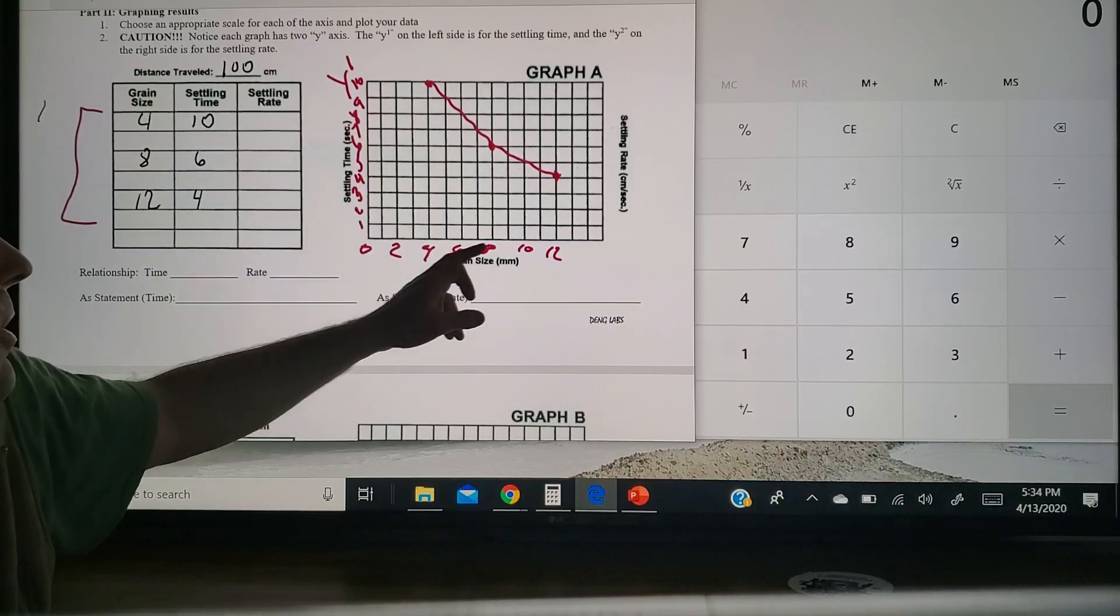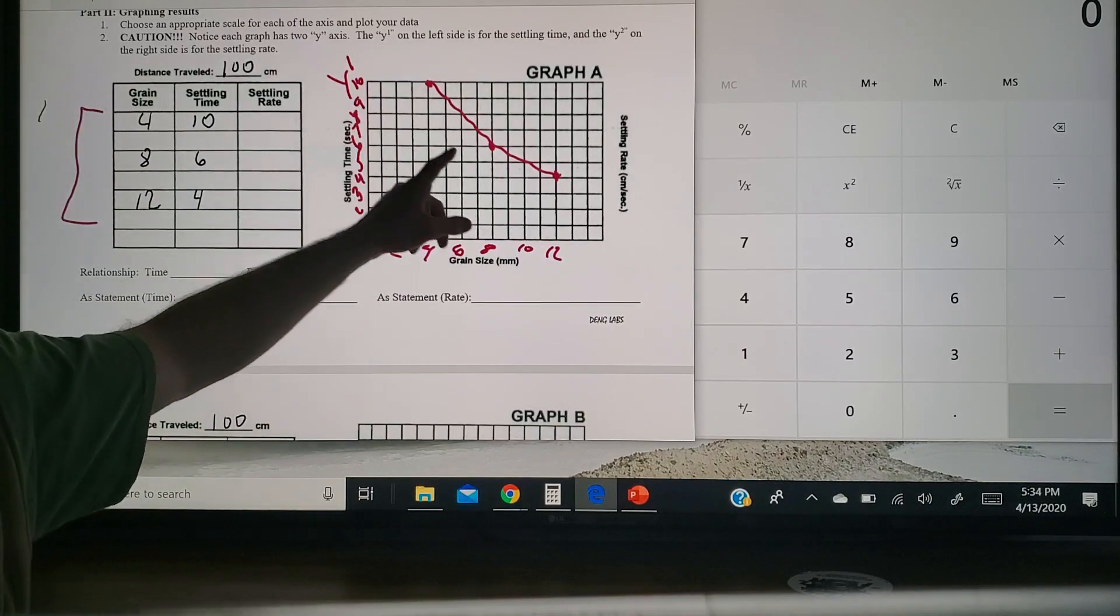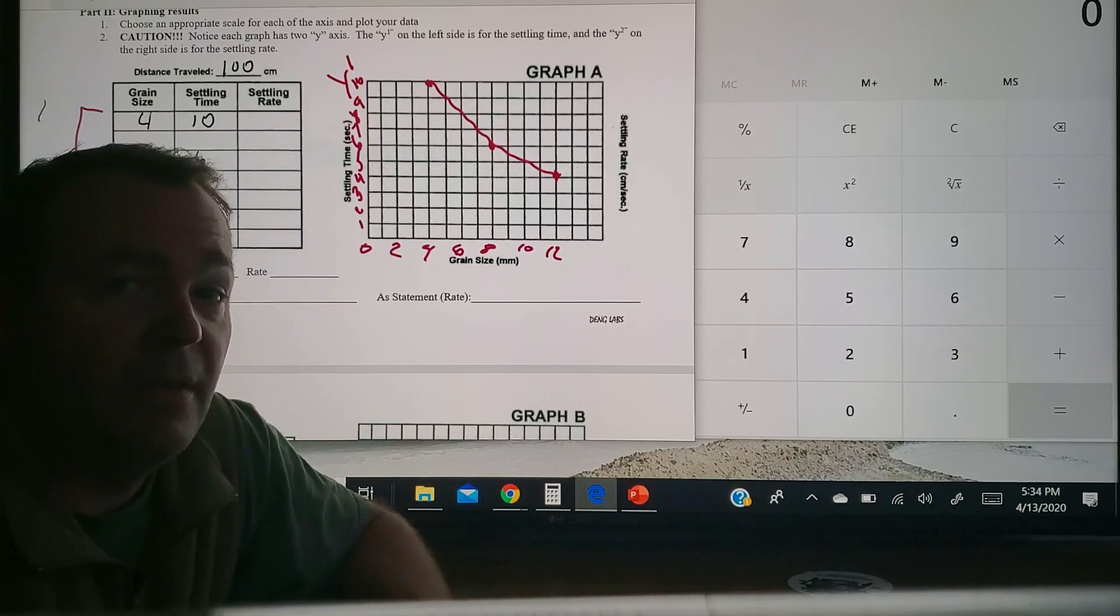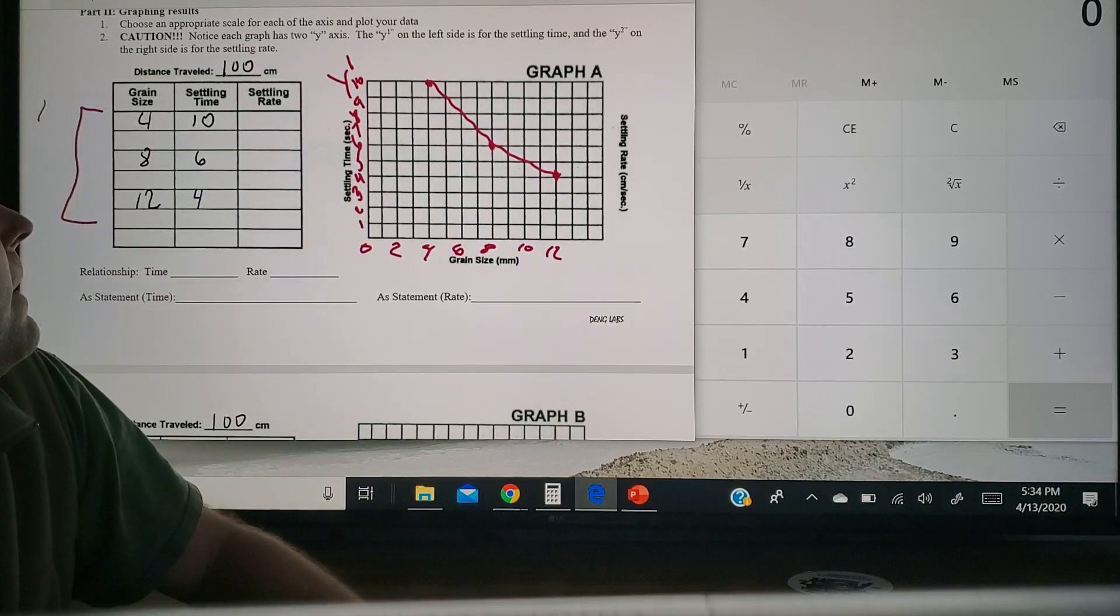So the bigger the particle gets, the less time they took to settle, and that makes sense. The bigger they are, the harder they fall.